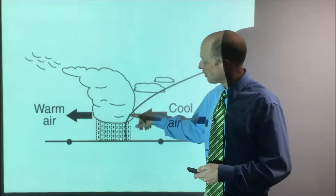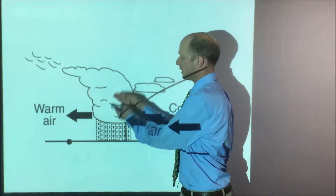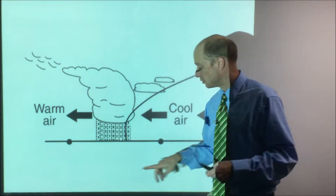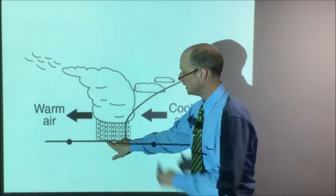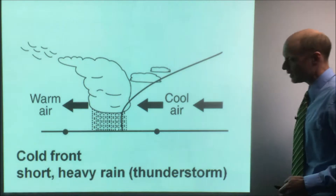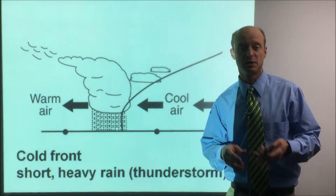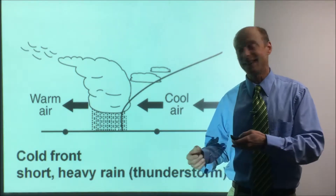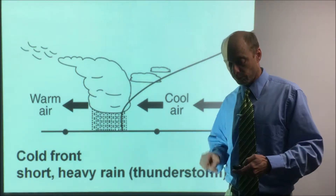The nature of a cold front is that it's kind of steep in the front, so the air gets pushed up nearly straight, making the clouds tall, and you get heavy rain like thunderstorms. The front isn't that wide, so if you're standing there, it will pass over you kind of quickly. The weather you get at a cold front is short, heavy rain — think thunderstorms, really hard rain for 20 or 30 minutes, and then it passes.